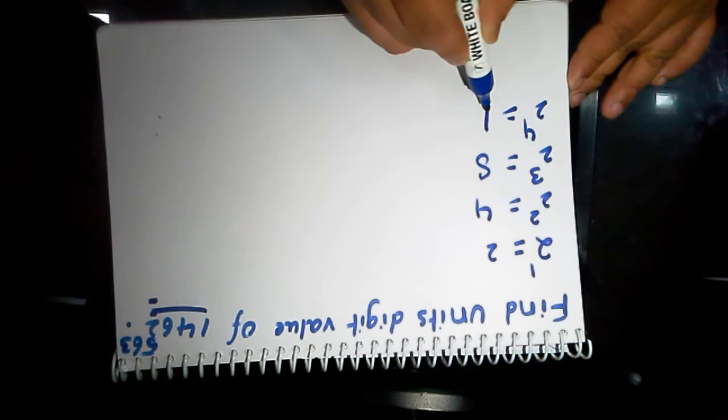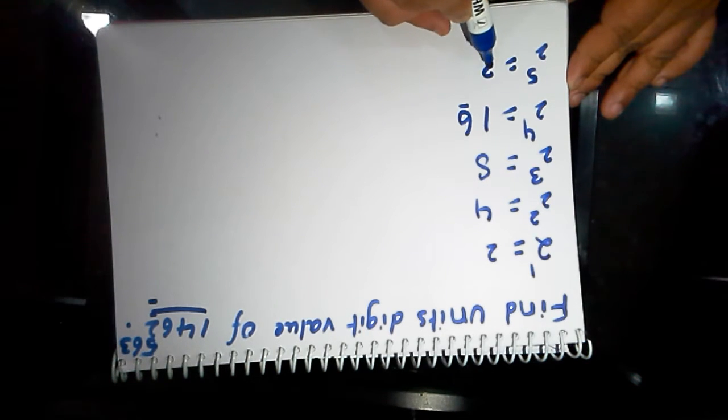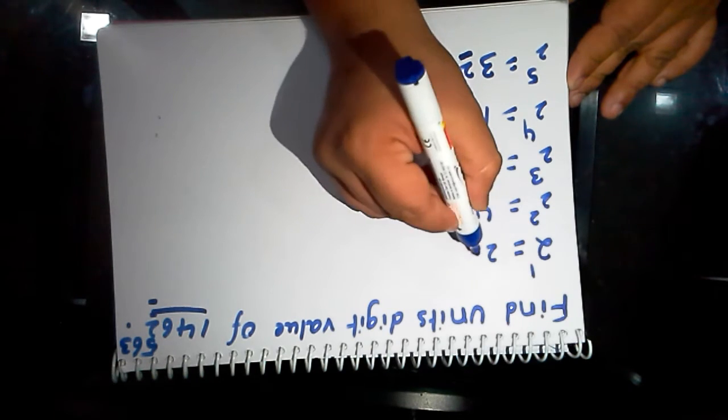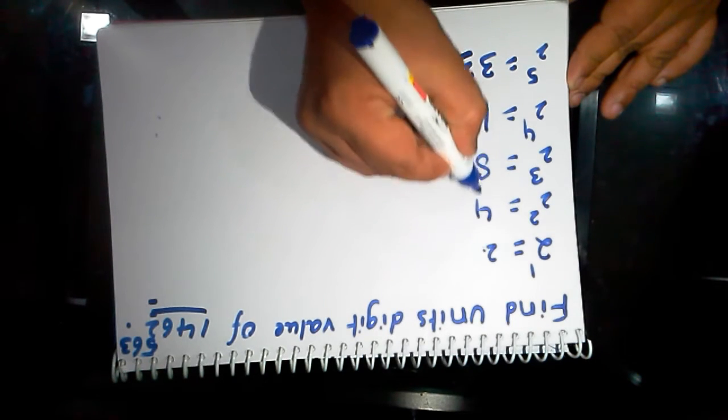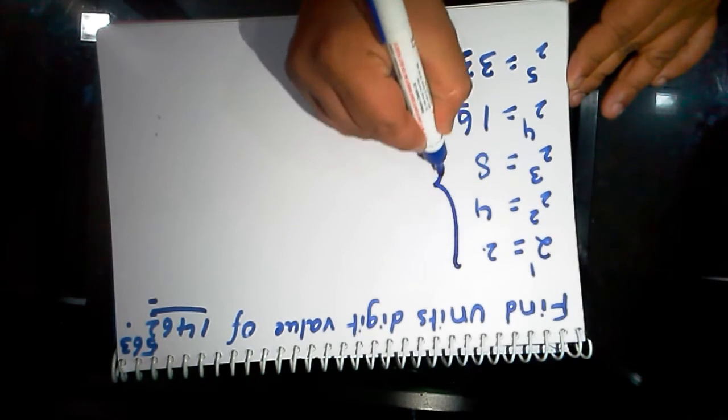The units digit value is 6. Again, 2 power 5 is equal to 32. Now the units digit value is 2. These are repeating: 2, 4, 8, 6, 2, 4, 8, 6. This is called a cycle.